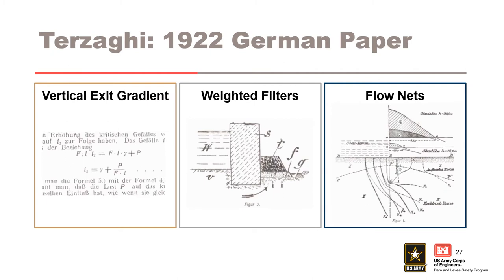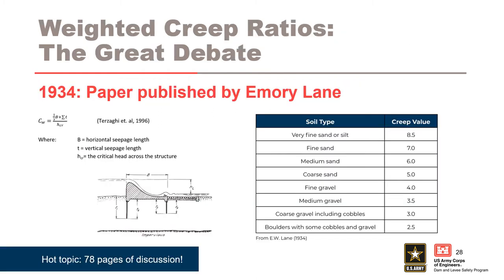Shortly thereafter, Terzaghi came to the US and worked at MIT as a professor. During this time, he published his findings in English in the Journal of the Boston Society of Civil Engineers. The concepts were quickly adopted and put into practice by USACE, as reflected by work conducted in the early 1930s at the Vicksburg Soil Mechanics Laboratories in Mississippi, the Fort Peck Laboratory set up for construction of Fort Peck Dam, and the Muskingum Valley Soil Laboratories constructed in Ohio during public works projects building a series of 12 dams.